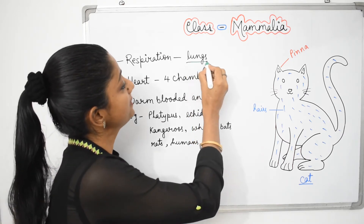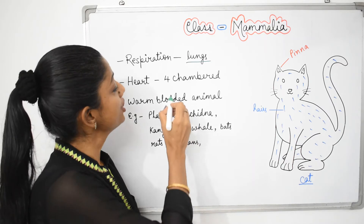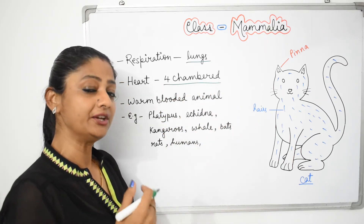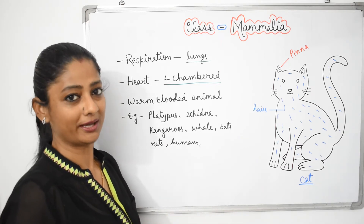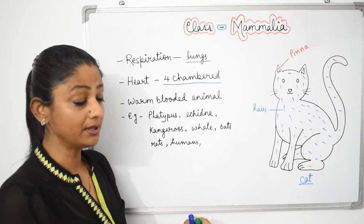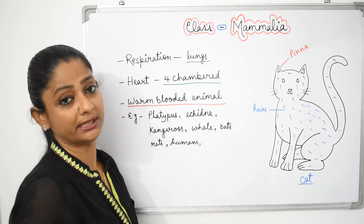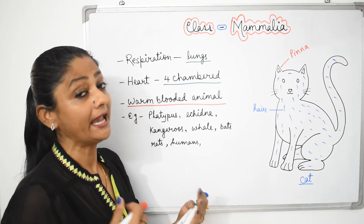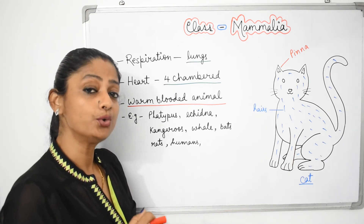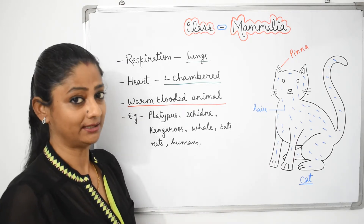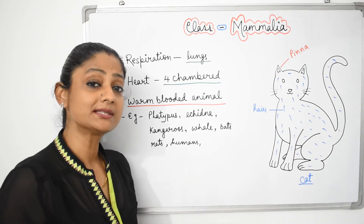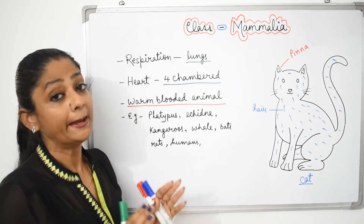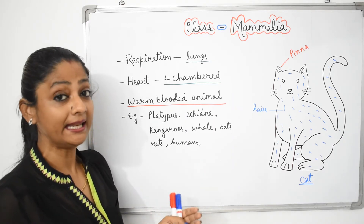Whale uses its limbs for swimming, and bat uses its limbs for flying. For respiration, they have well-developed lungs. Their heart is four-chambered — two auricles and two ventricles. This four-chambered heart evolved from the crocodile. All mammals are warm-blooded animals — animals that maintain a constant body temperature regardless of the environment. Only birds and mammals are warm-blooded; all others are cold-blooded.